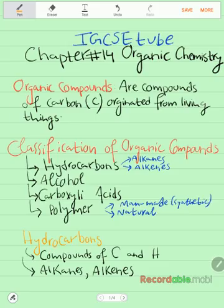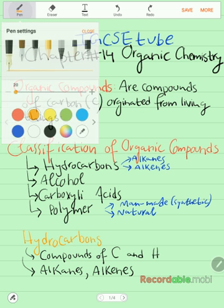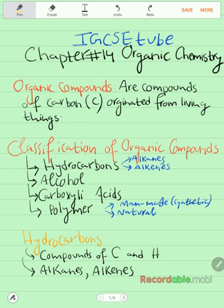We will start off with a really simple definition, which is organic compounds. What are organic compounds? Organic compounds are compounds of carbon originated from living things. So the basic definition is organic compounds are compounds of carbon. That's the simple and basic definition.